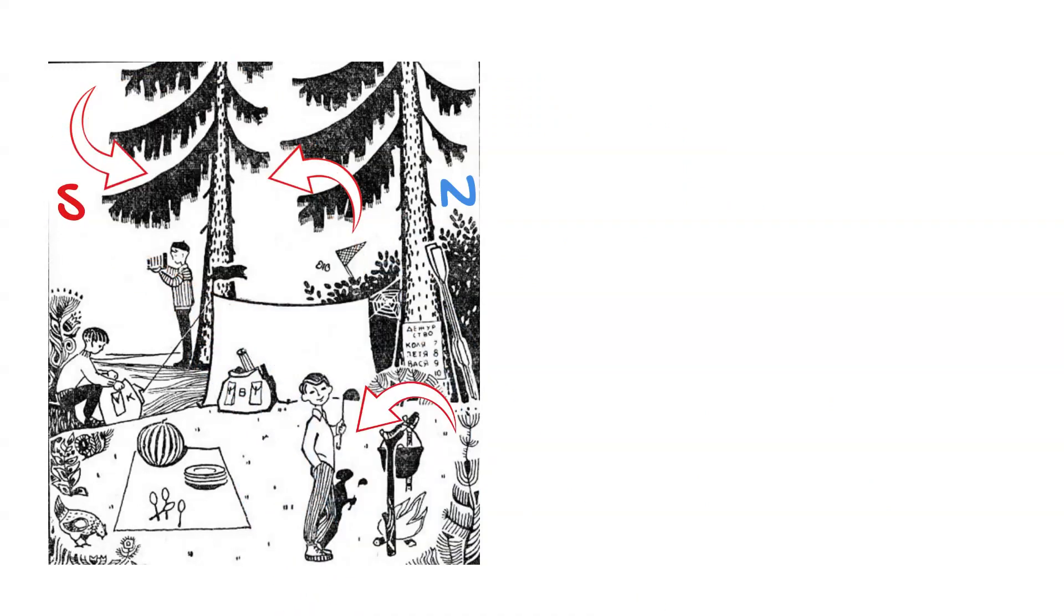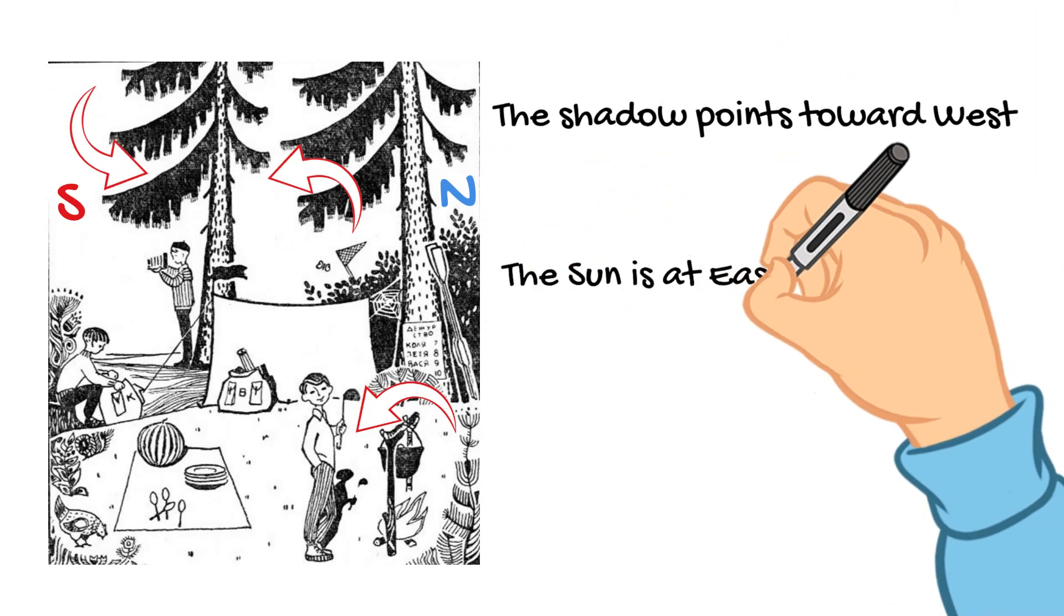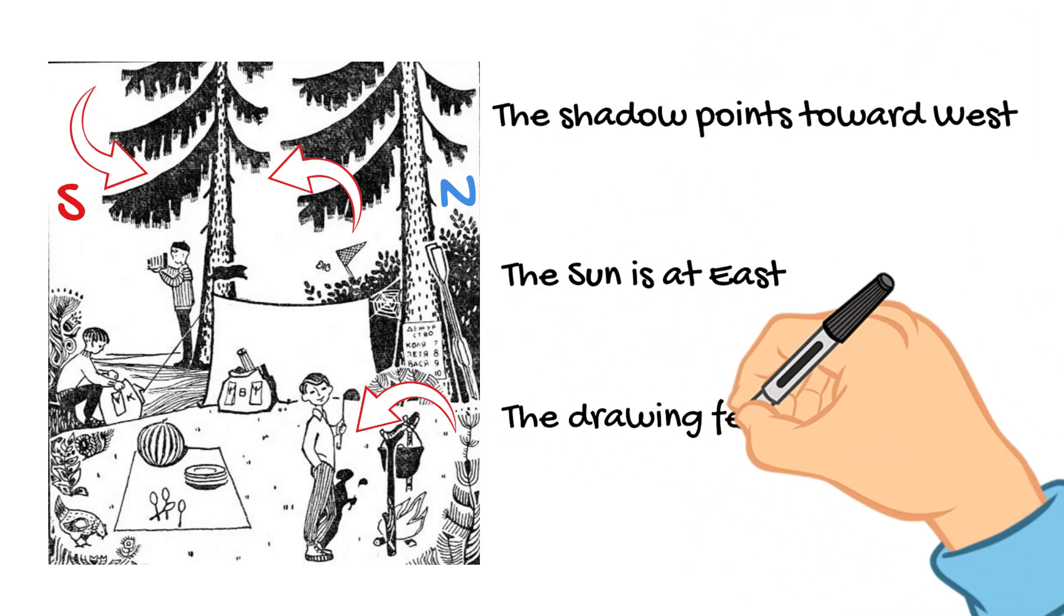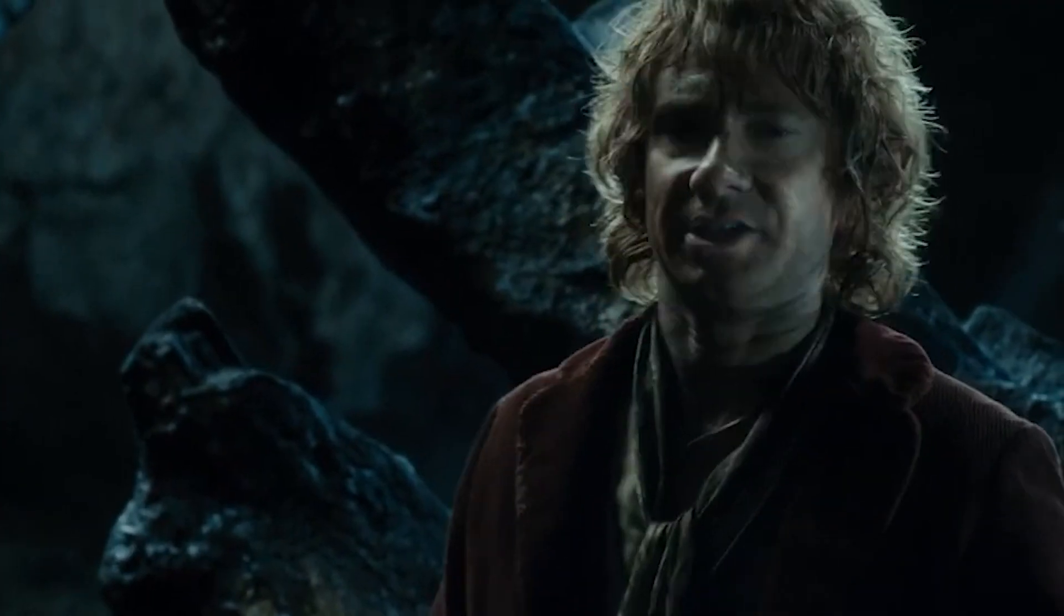Therefore, we know the location of north, south, east, and west, which leads us to the conclusion that the shadow points toward west. Therefore, the sun is at east and the drawing features the morning. Actually, it wasn't that hard.